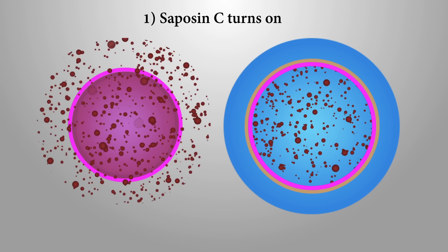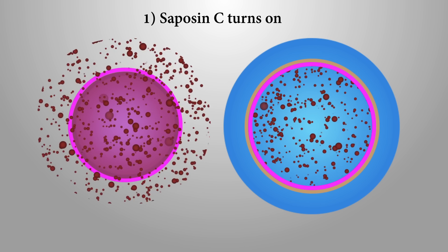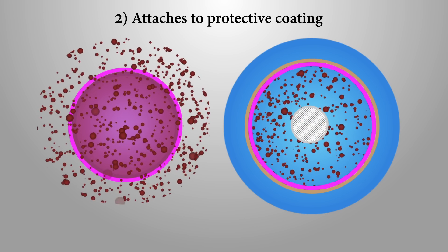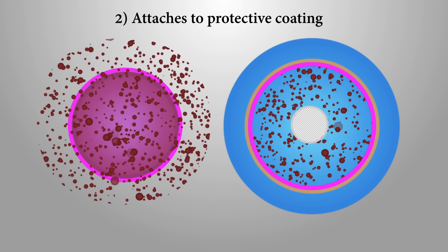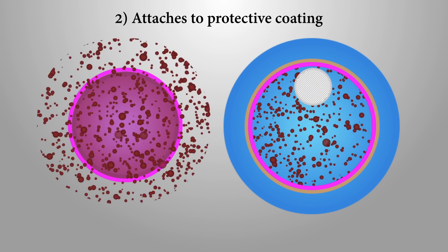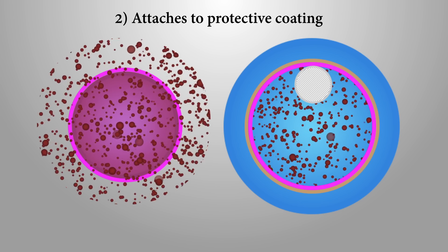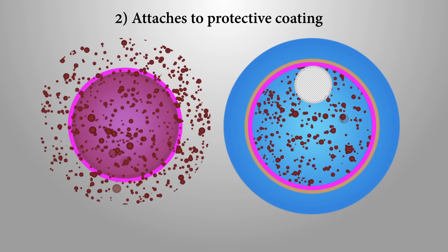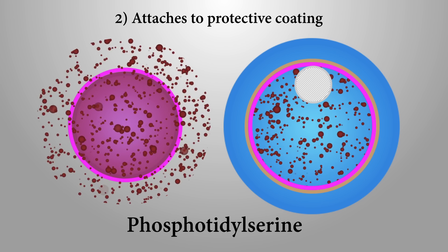First, in an acid environment, saposin C turns on. Second, once saposin C is turned on, it can attach to the protective coating inside a lysosome. This protective coating consists of a lipid called phosphatidylserine.